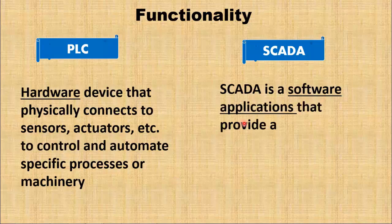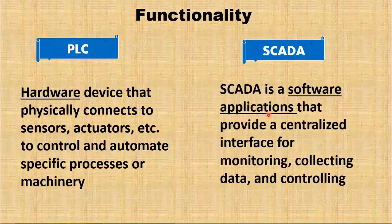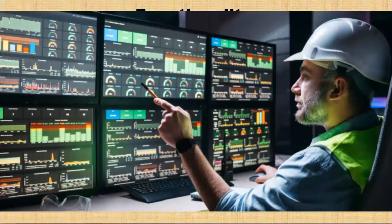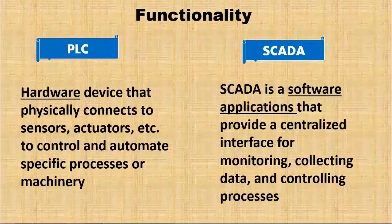SCADA systems, on the other hand, are software applications that provide a centralized interface for monitoring, collecting data, and controlling processes across an entire industrial system. SCADA is more focused on supervisory functions, allowing operators to view and interact with the processes.